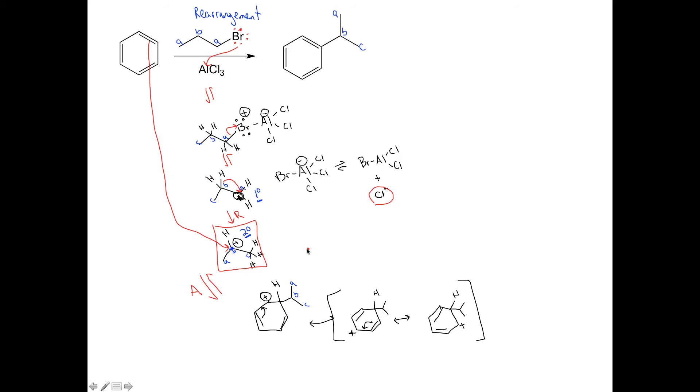So going back, using this chlorine here, I'm going to draw in my Cl- as a full octet. And we can now take these electrons to form a new bond from H to Cl.